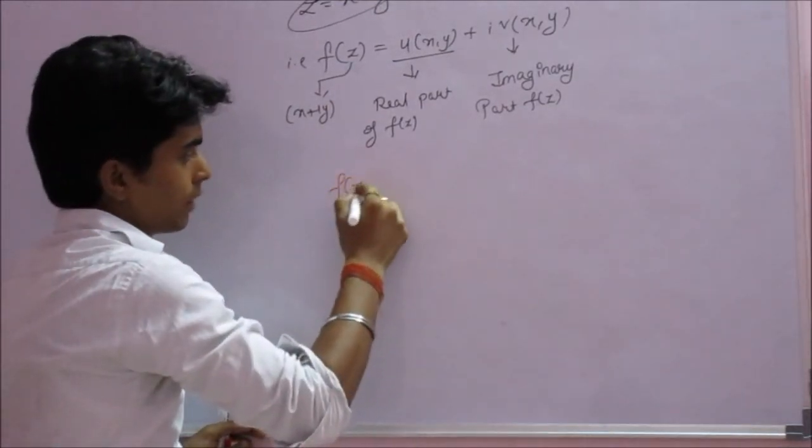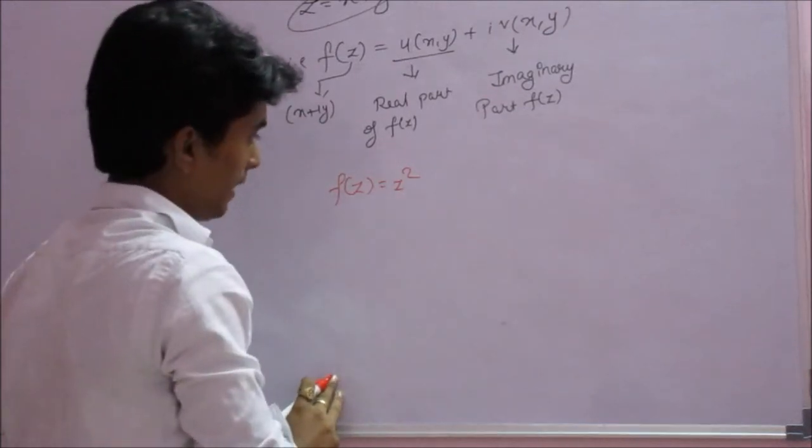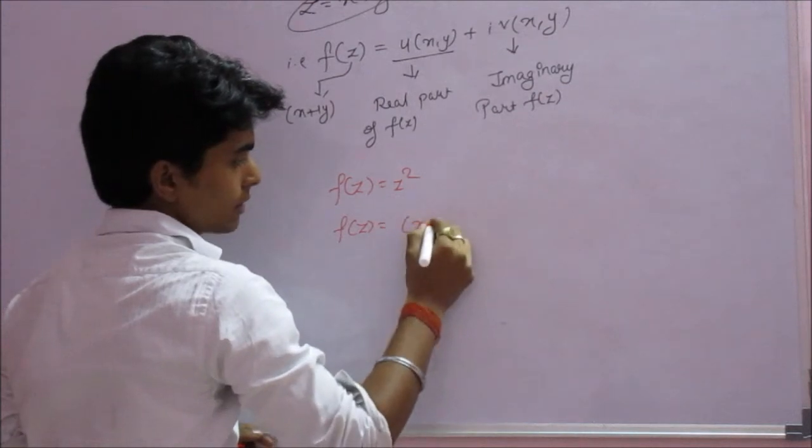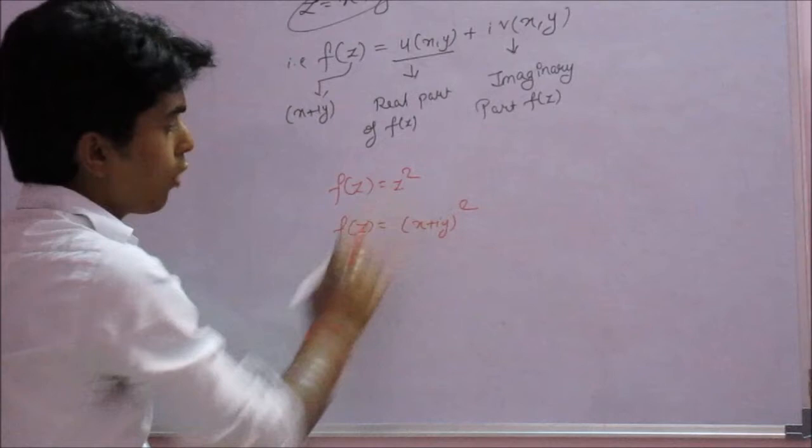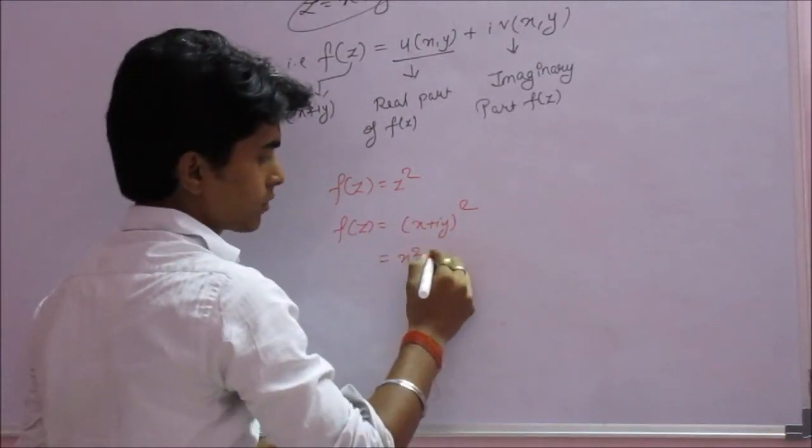f(z) equals z squared. Let's take an example. Then f(z) equals (x plus iy) the whole square, because the value of z is x plus iy.